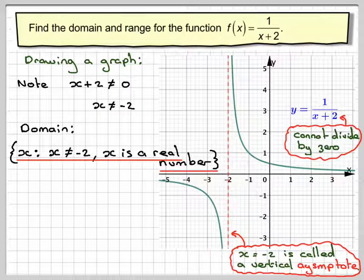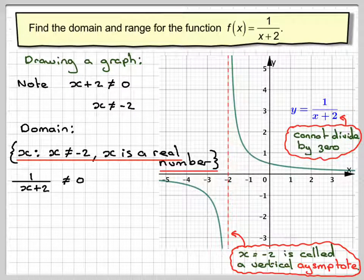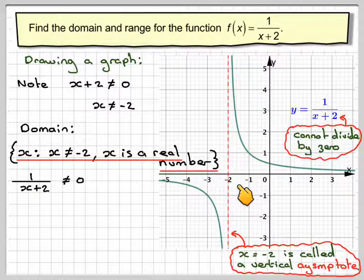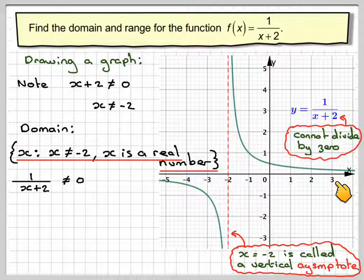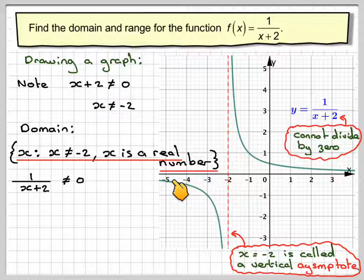So the range is a set of values that you are going to get out. Now you might have noticed by looking at the graph because look here and here you can see that the curve is never going to cut the line y is equal to 0 or the x axis.